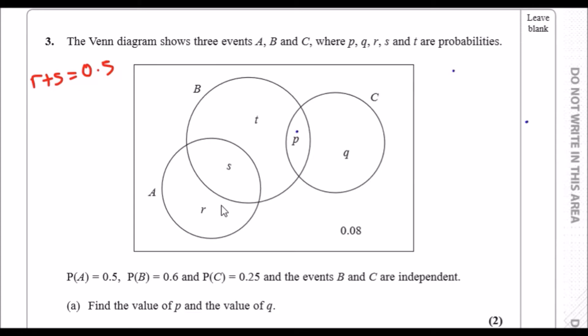Probability of B would be s plus t plus p, which must be 0.6 because we're including the whole probability of B that occurs. And probability of C, as in p and q, must equal 0.25, so p and q is 0.25.